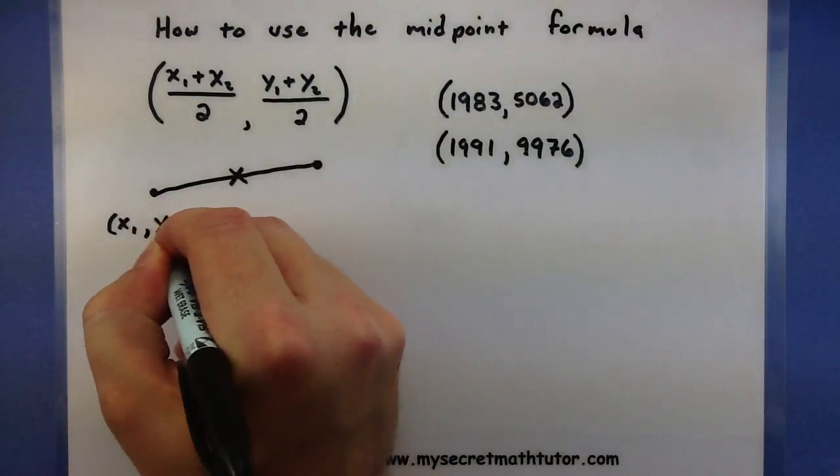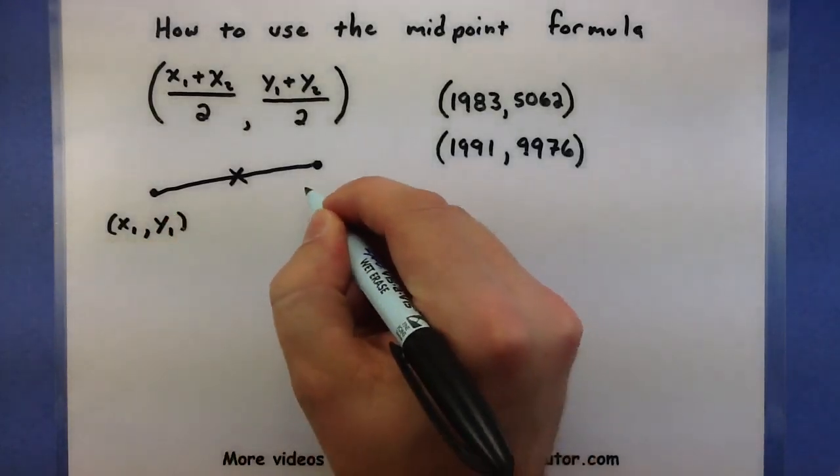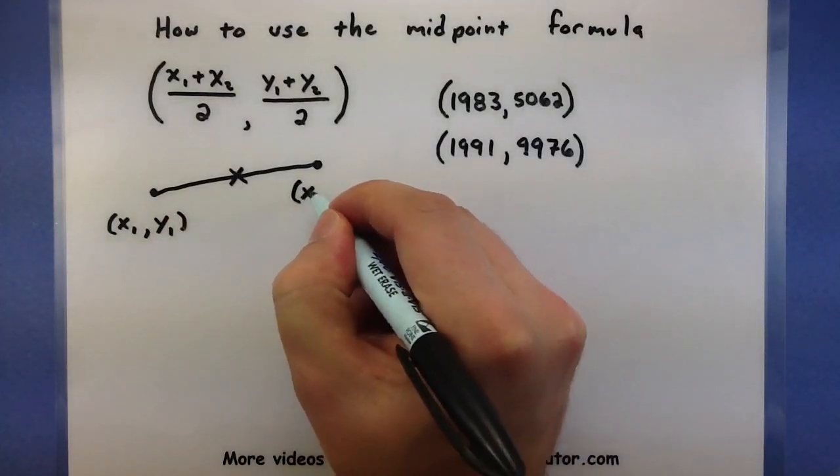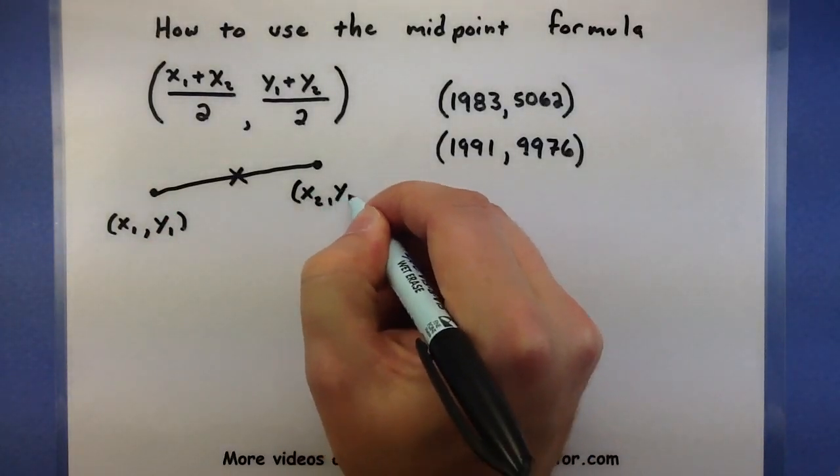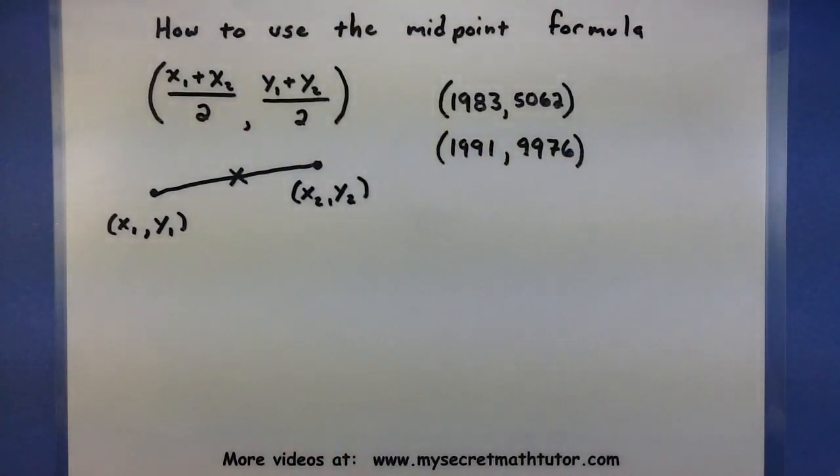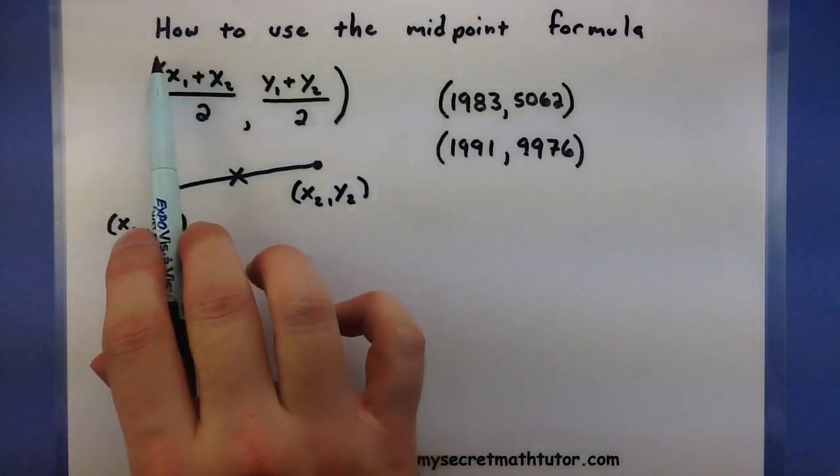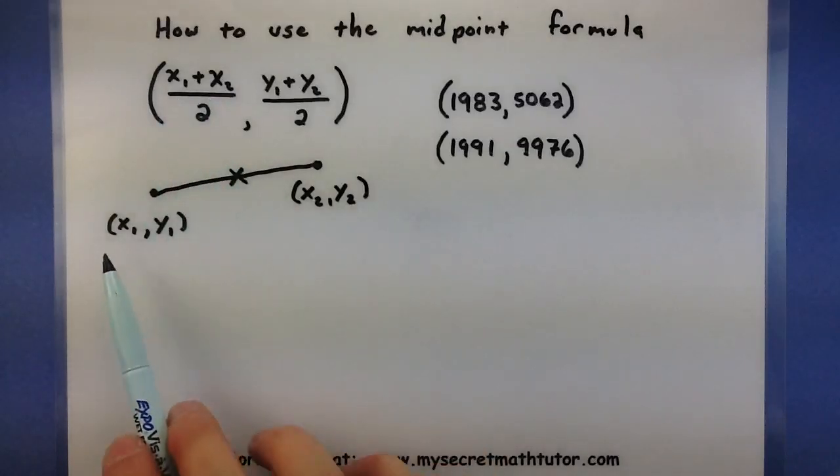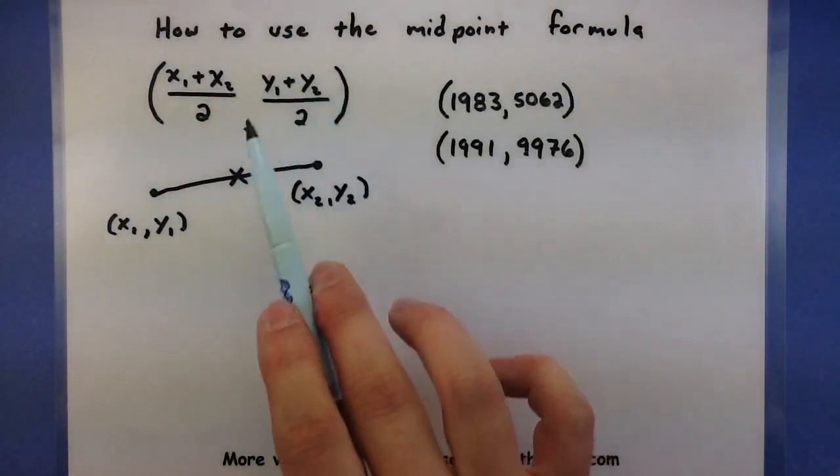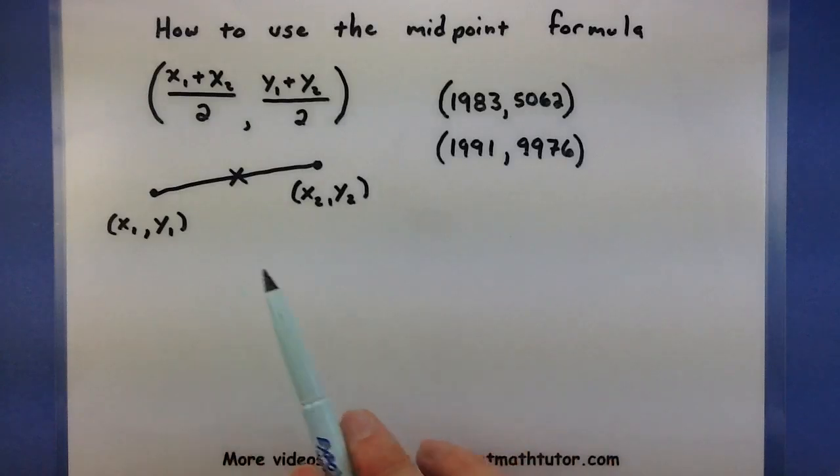We often label the coordinates of these points as x1 and y1, and the other one as x2 and y2. The way this formula works is it basically finds the average of the x values by adding them together and dividing by 2, and then it finds the average of the y values by doing the same thing, adding them together and dividing by 2.